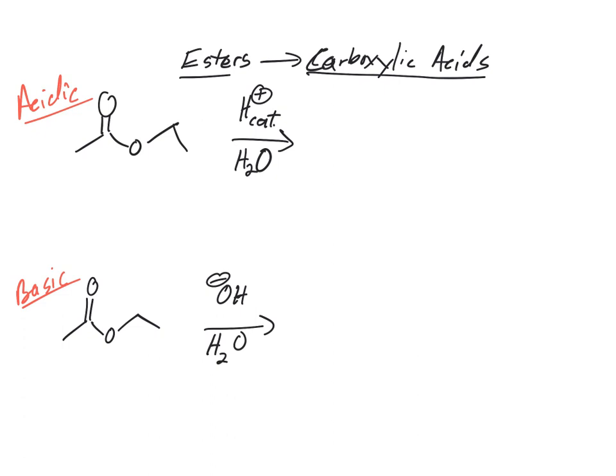Let's do the acidic ones first. If you're in acidic conditions, the first thing you're going to do is protonate. You always protonate the oxygen that has a pi bond because of possible resonance structures. This is actually the most electron rich oxygen.